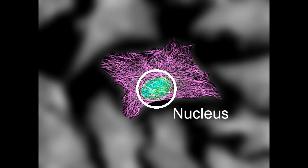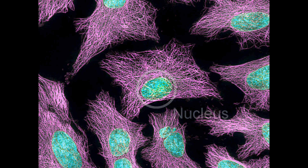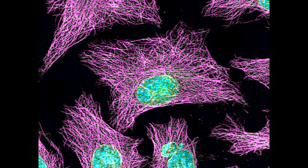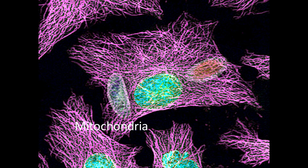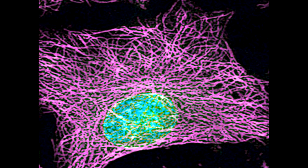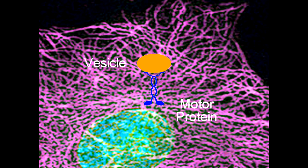You can see the shape of each individual cell outlined by the web of microtubules inside. But they aren't just there to provide structure for the cell — this network also functions as a transport system. The cell is also full of organelles and molecules, all with a job to do. Some structures within the cell need to move around to complete their function. For example, the Golgi apparatus packages proteins and other molecules for export out of the cell. Vesicles that bud off of the Golgi hitch a ride on special motor proteins that travel along the microtubules all over the cell.